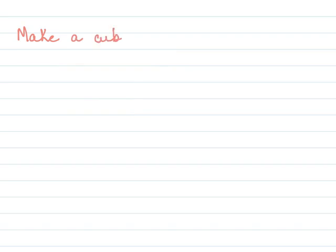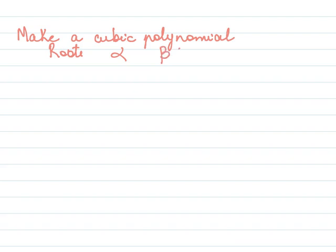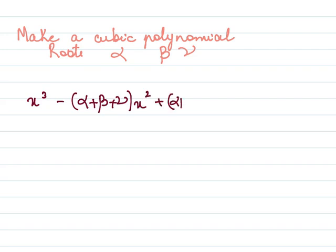In this slide we will see how to make a cubic polynomial when the roots alpha, beta, and gamma are given. The formula is: x³ - (α+β+γ)x² + (αβ+βγ+αγ)x - αβγ. This is the formula we use to construct a cubic polynomial from its roots.